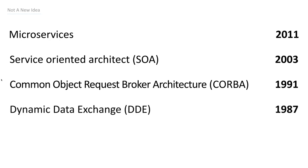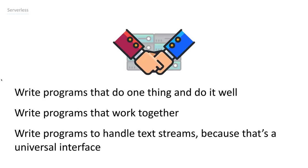Before that, we had dynamic data exchange, primarily Microsoft and Windows. Similar concept — one application or service in the operating system providing a service to another so you didn't have to write a new one. This started in the late 80s. If we go all the way back to the core, we get to one of my all-time favorites: the Unix philosophy. Not a straight technology but a philosophy of how to do things. Summarized as: write programs that do one thing and do it well, write programs that work together, and write programs that handle text streams because that's a universal interface.